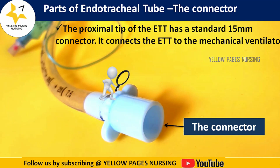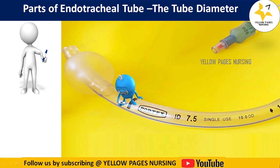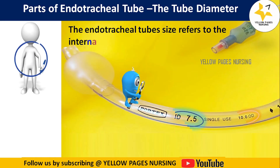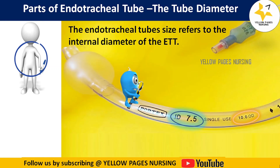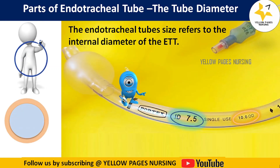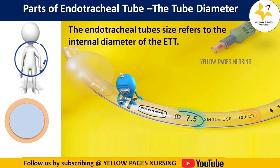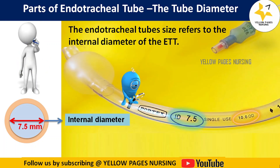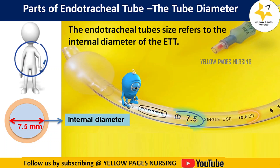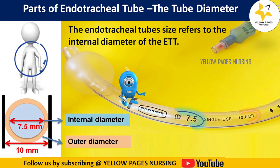Next comes the tube diameter — the endotracheal tube's size refers to the internal diameter of the tube, usually measured in millimeters. From the picture it shows ID 7.5, meaning the internal diameter is 7.5 millimeters, and OD 10, meaning the outer diameter is 10 millimeters. The internal diameter represents the size of the endotracheal tube.